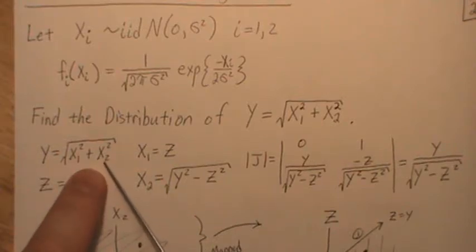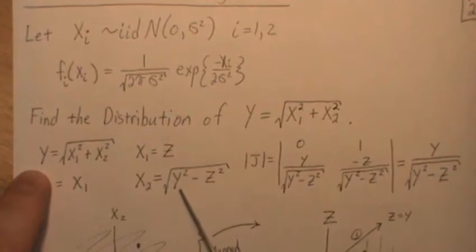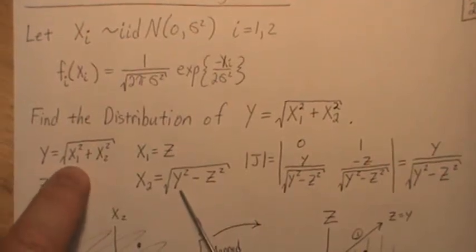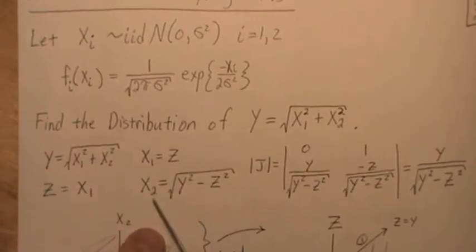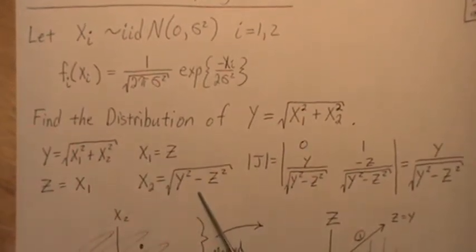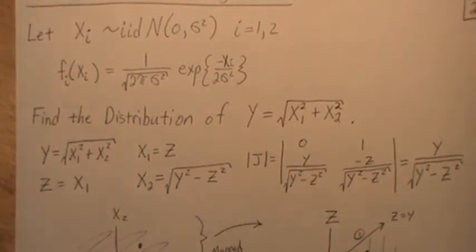But here to solve for x2, we need to square both sides. That's where the y squared comes in. And then we subtract x1 squared to the other side. So that's z squared. And so we have x1 is this, x2 is this, square root of y squared minus z squared.